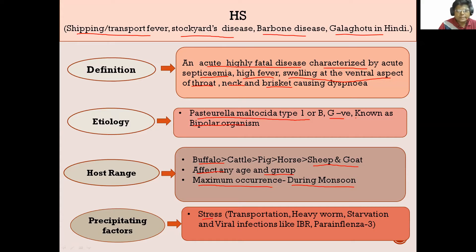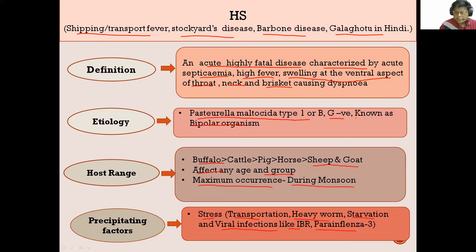The precipitating factors for the disease are stress. Stressors include transportation, heavy worm burden, starvation, and viral infections like IBR and para-influenza-3. All these precipitating factors are responsible for the causation of HS in cattle, buffalo, and other animals.